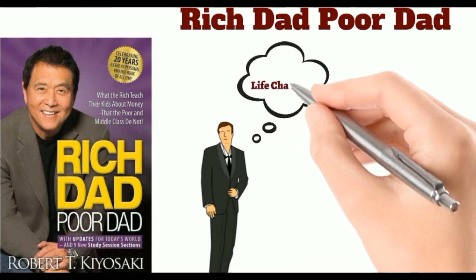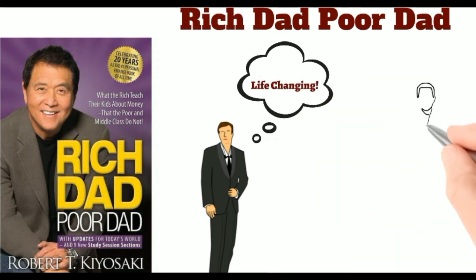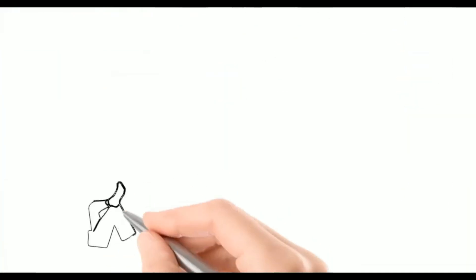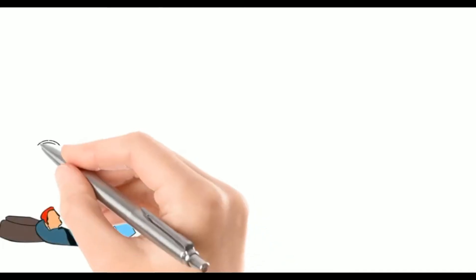Robert Kiyosaki had two fathers, a rich one and a poor one. The poor dad, who was his real father, was highly educated with a PhD and so intelligent that he completed his undergraduate degree in only two years. On the other hand, the rich dad, who is his best friend's father, did not even finish the 8th grade.